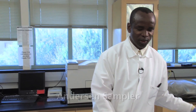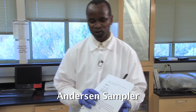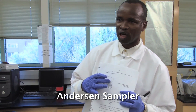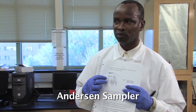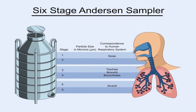The apparatus I'm going to talk about is called the Anderson sampler. This diagram here is showing how this apparatus really mimics the respiratory system of human beings. It's called a six-stage Anderson sampler — six-stage in the sense that the particle size is cascaded into six different categories.